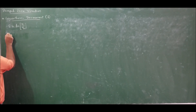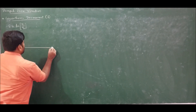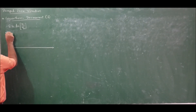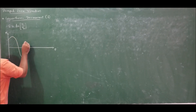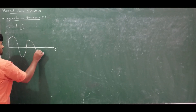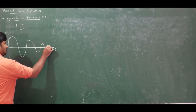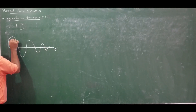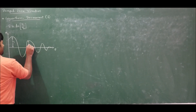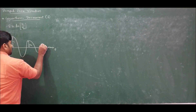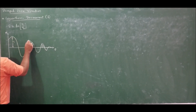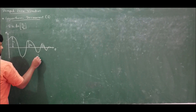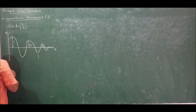To understand logarithmic decrement, let us recall the system response of an underdamped vibrating system. Plotting displacement versus time, the response curve shows successive amplitudes x1, x2, x3, and x4, each decreasing. From one amplitude to the next same-side amplitude constitutes one cycle, and the duration of that cycle is called the time period.